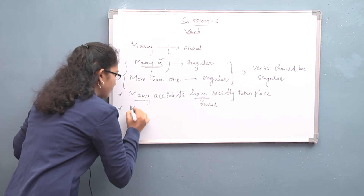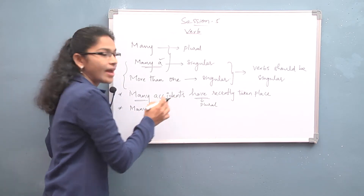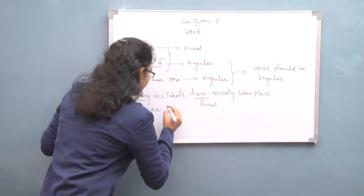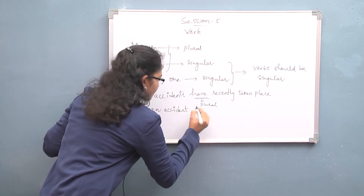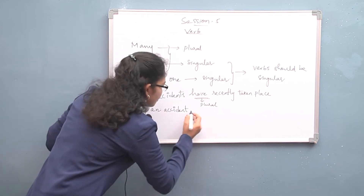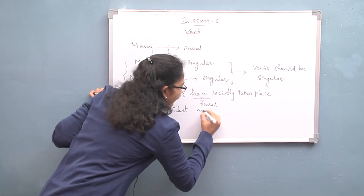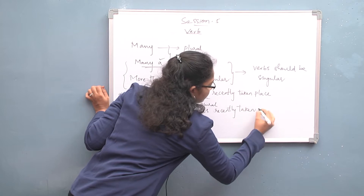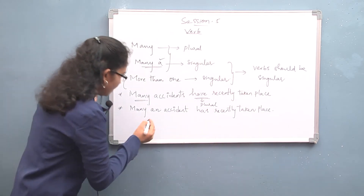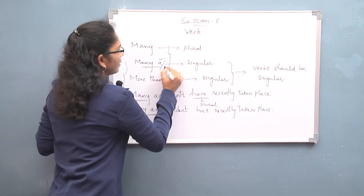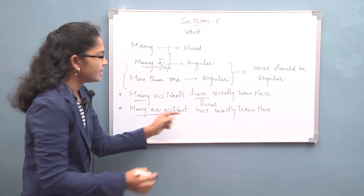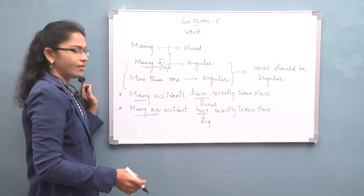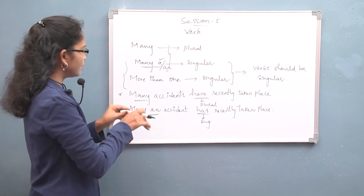Now take the same sentence with 'many a'. Instead of 'accidents' we get 'an accident', because whenever we have a vowel we use the article 'an'. So: 'Many an accident has recently taken place.' It may be 'many a' or 'many an' depending on whether the following noun starts with a vowel. This is the difference — 'many an accident has taken place' uses a singular verb.